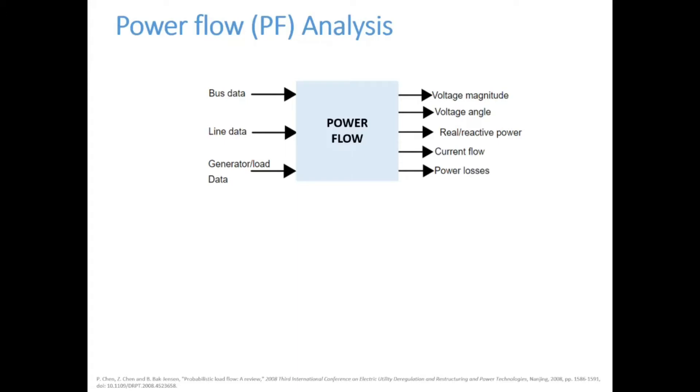It determines the steady state operating characteristics of the power system for a given load and generation. The primary outputs are the magnitude and phase angle of the voltage at each bus and the real and reactive power flows in each line. If these outputs are within the acceptable levels, it means that the power system is behaving normally.